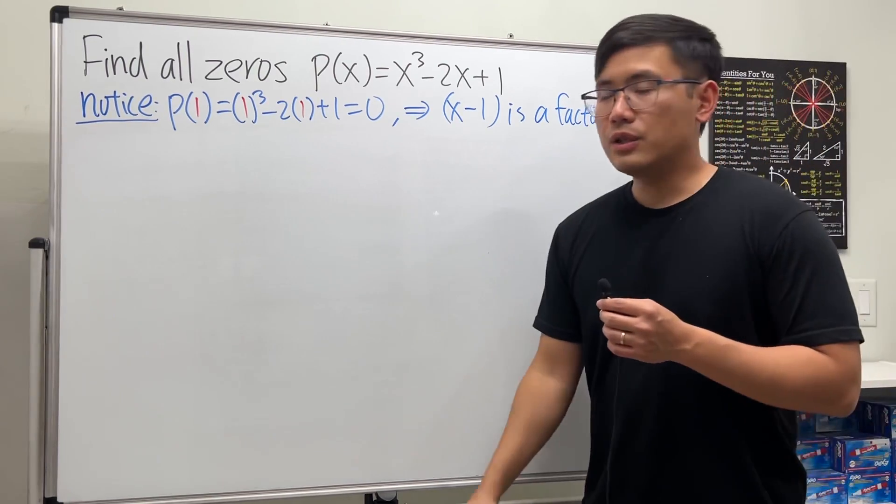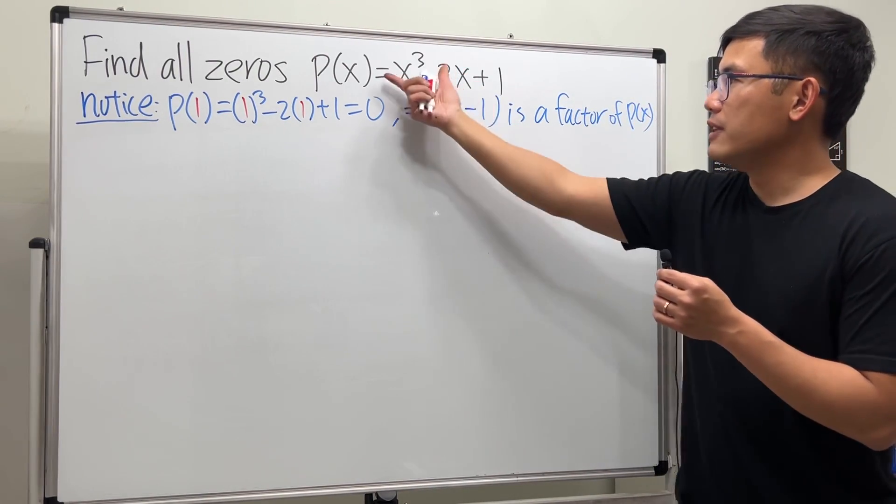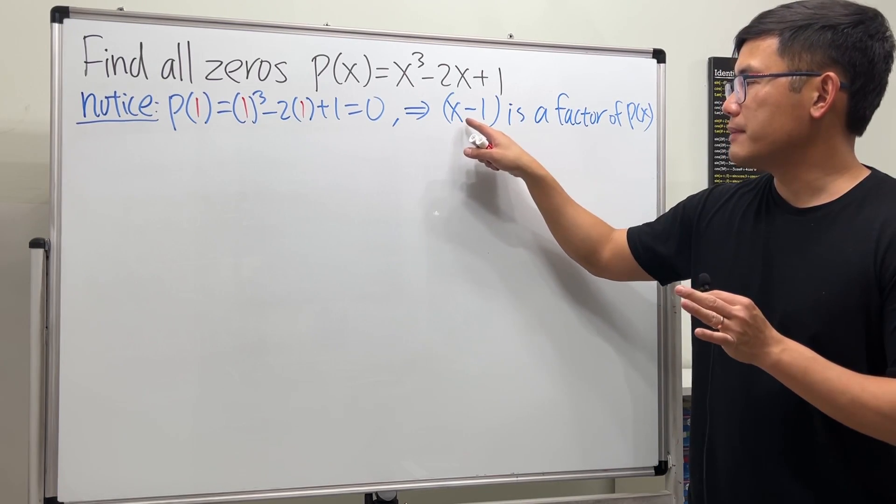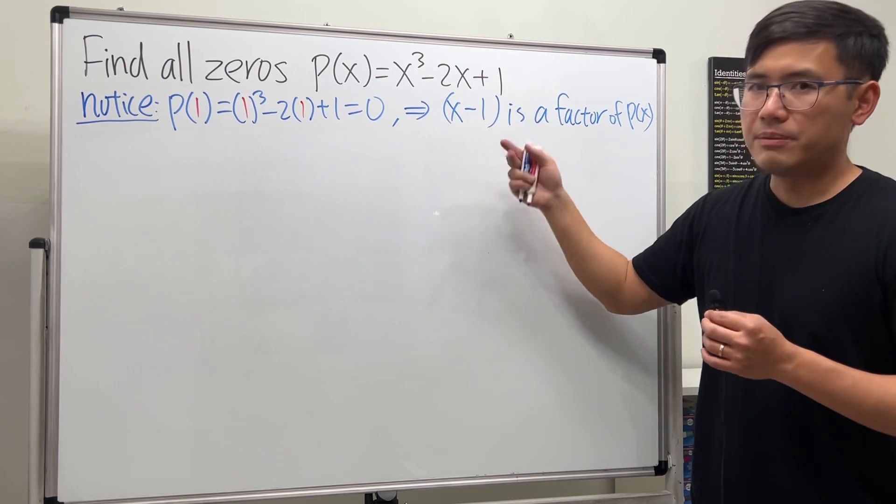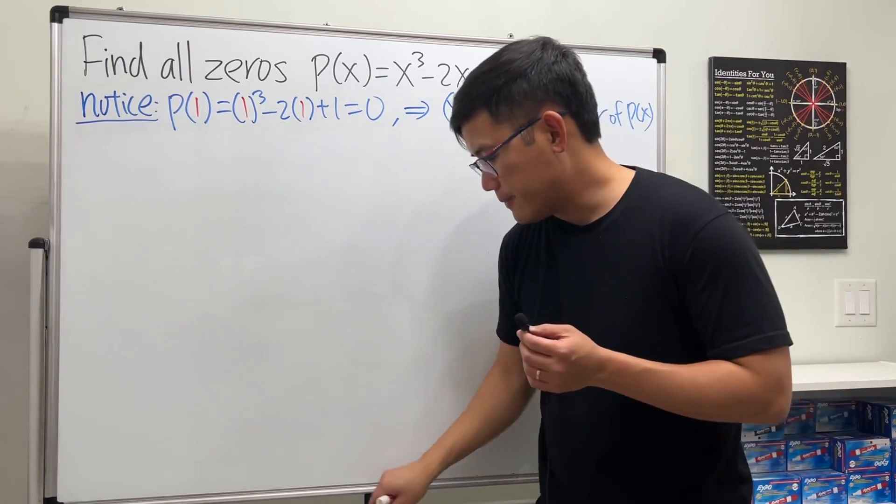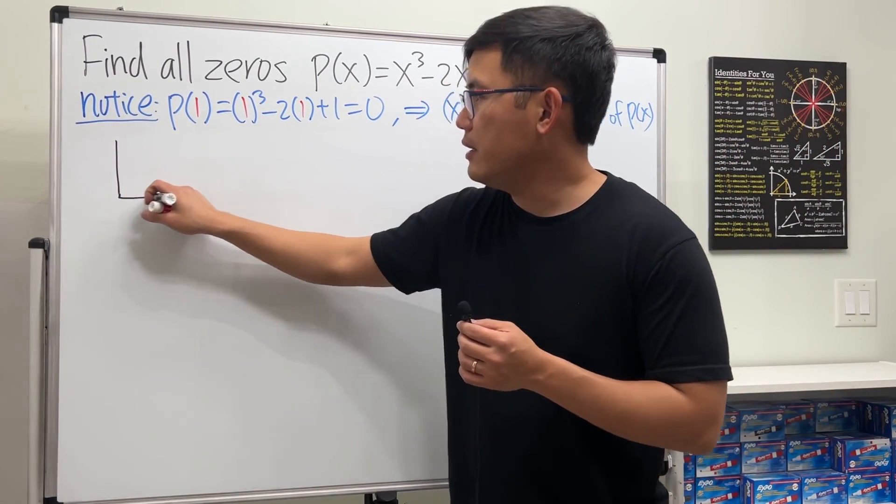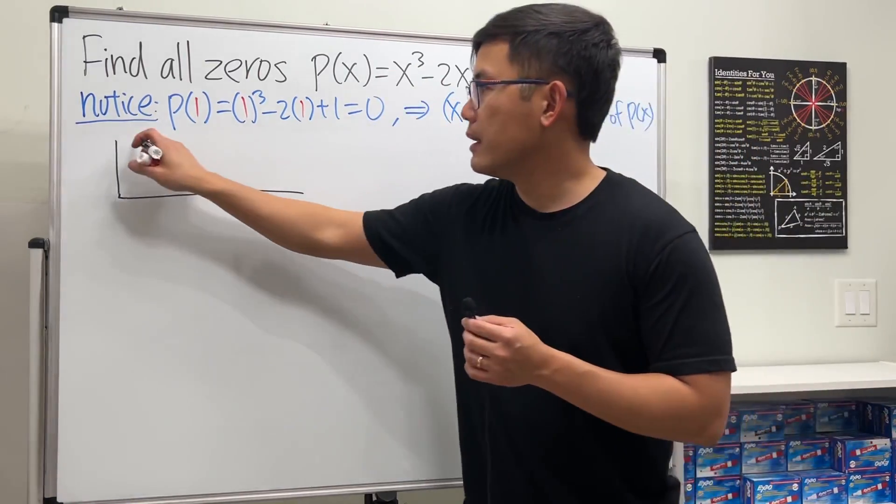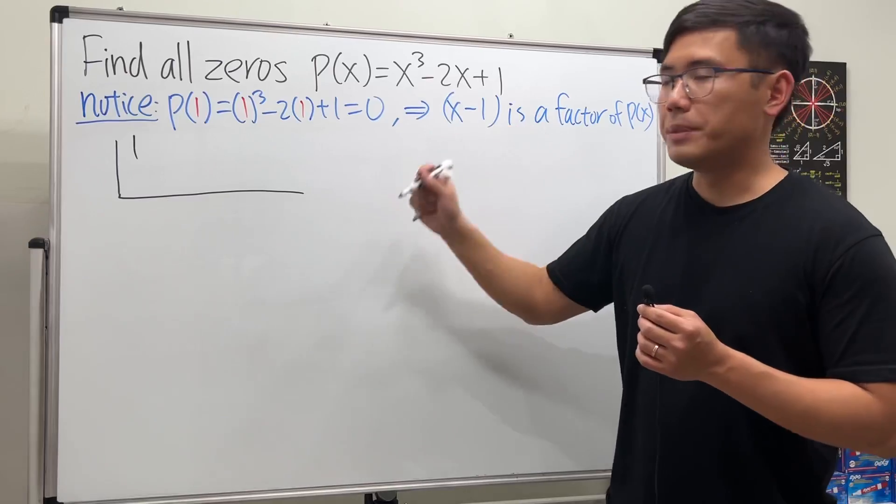So we can just go ahead and divide this by that, and this is so nice when we divide this by x minus the number, we can just use synthetic division. Have a look right here. Write down the coefficients: we have one, and there's no x squared so that would be zero, and then negative two, and then lastly we have one.